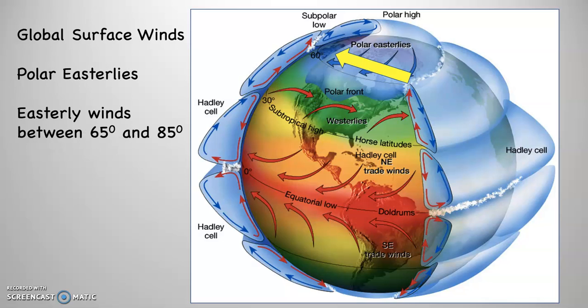Between 65 and 85 degrees in both hemispheres — 65 degrees north to 85 degrees north and 65 degrees south to 85 degrees south — there is a consistent easterly flow of air. We call these the polar easterlies.